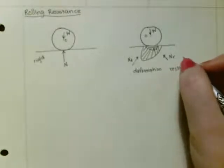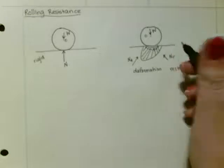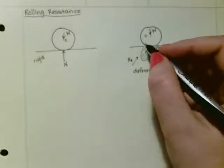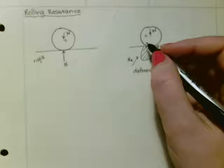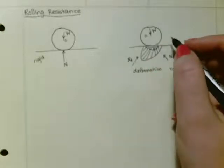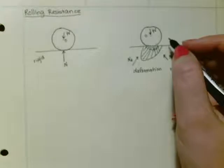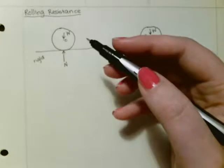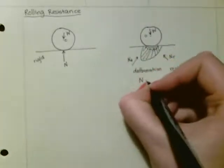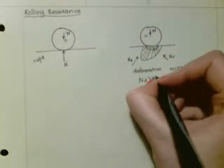So as a cylinder rolls, the surface material in front retards the motion since it is being deformed. Whereas the material in the rear is restored from the deformed state, it tends to push the cylinder such that ND is always going to be greater than NR.